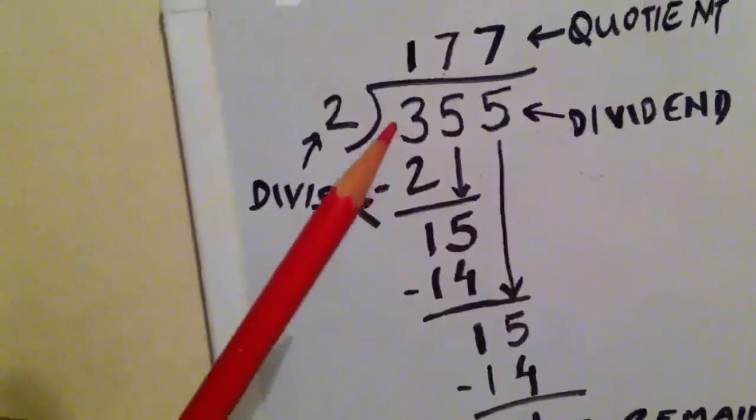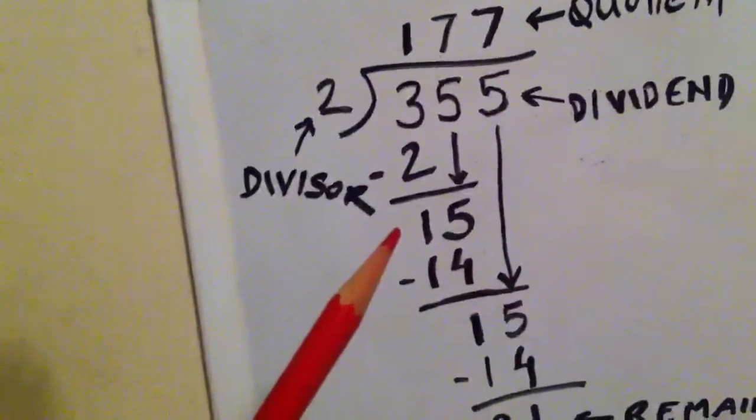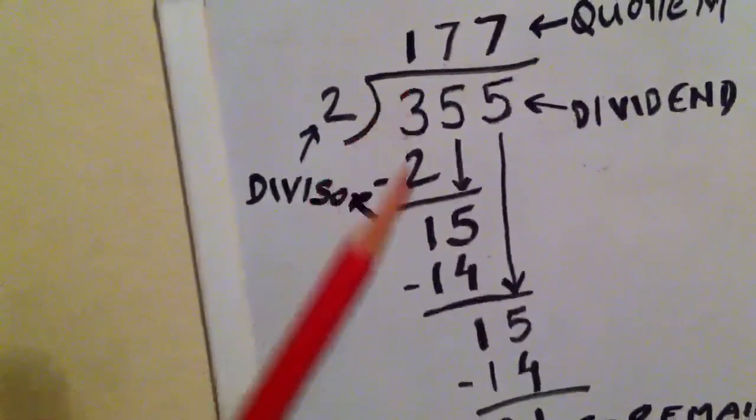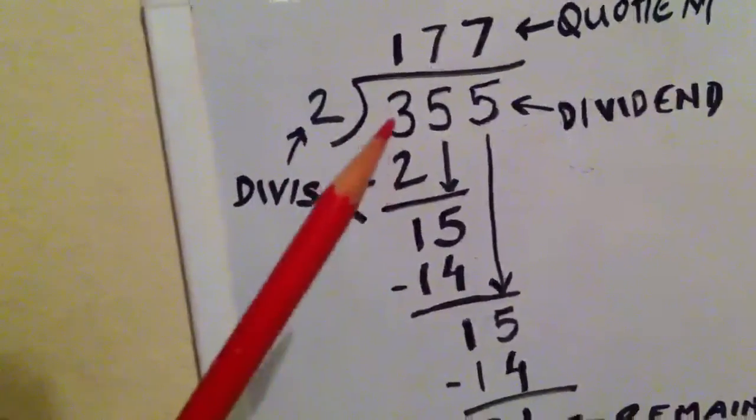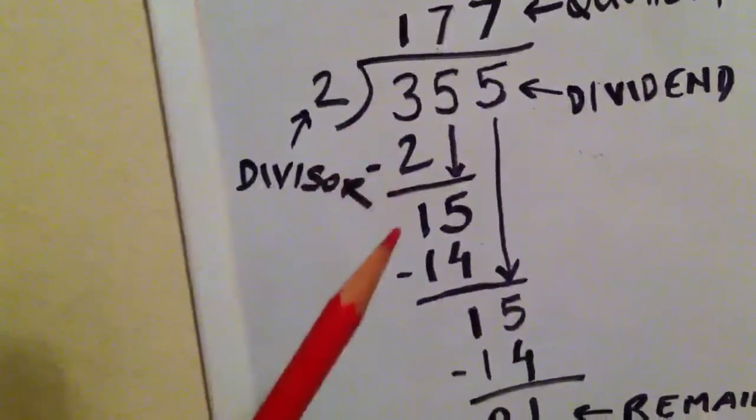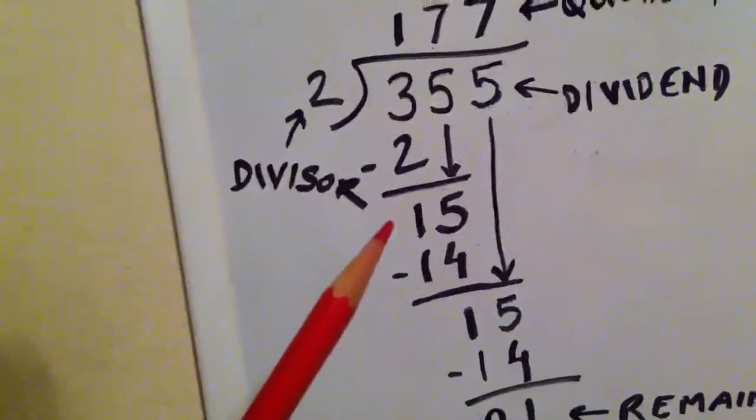Once we have got that, we subtract 2 from 3. So here we have 3 minus 2 is 1. Once we are done dealing with the first digit of the number, and after subtraction we got 1 as an answer.